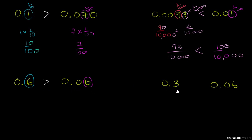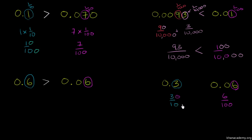Now let's think about 0.3 versus 0.06. This 3 literally represents three tenths, while this 6 right over here represents six hundredths. And if you wanted to compare them directly, you could multiply three tenths — both the numerator and the denominator by 10, so you're not changing its value. This becomes 30 over 100. Three tenths is the same thing as 30 hundredths, and 30 hundredths is a lot larger than 6 hundredths. So this is greater than.